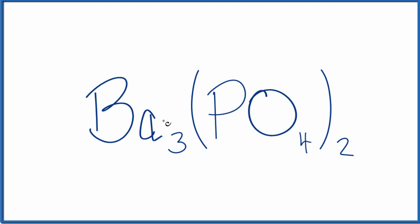For barium, that's the metal. That's in group 2. Each one of these bariums has an ionic charge of 2+.